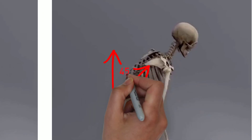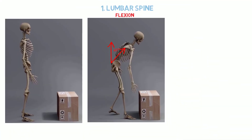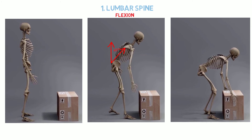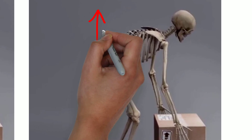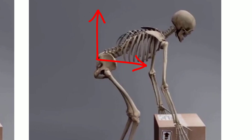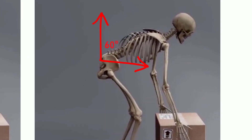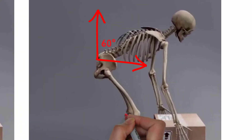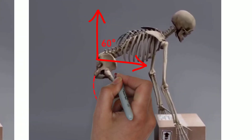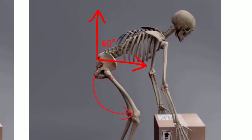Once full lumbar flexion is achieved, the pelvis will start rotating anteriorly on the femurs, producing up to 60 degrees of motion. This is also known as anterior pelvic tilt or anterior pelvic rotation. The anterior rotation is typically limited by tension in the hamstrings or the posterior capsule of the hip joint.